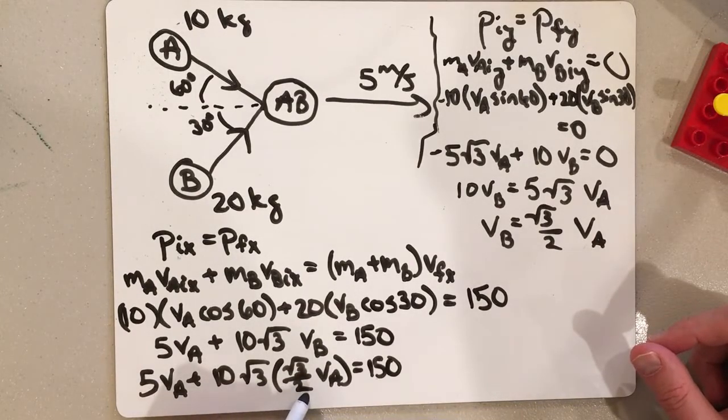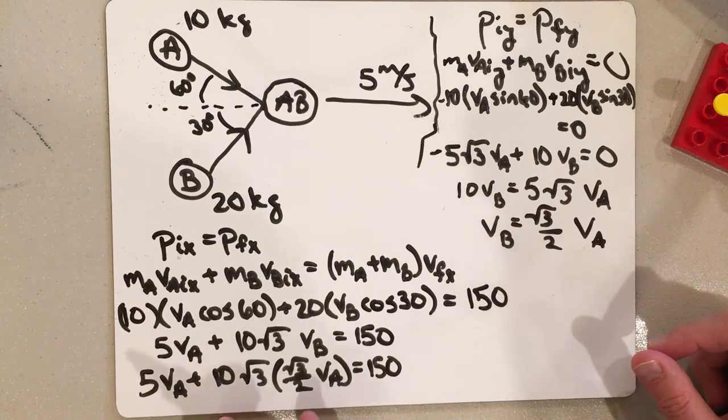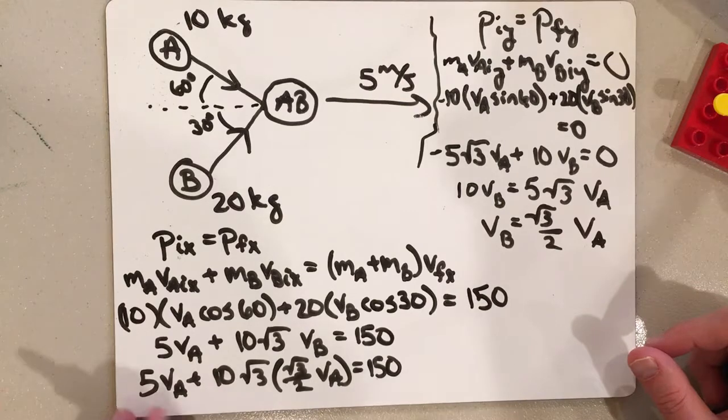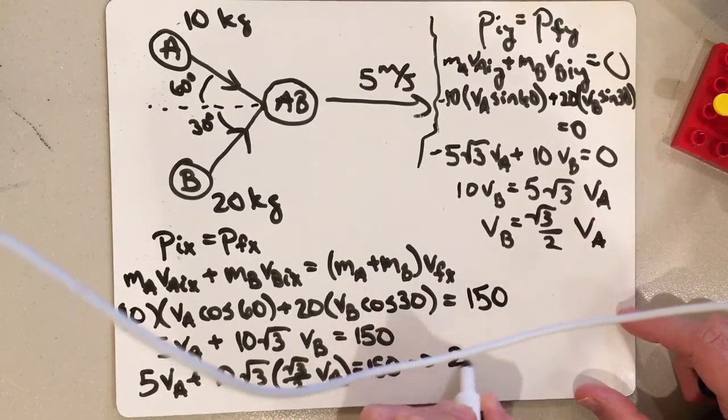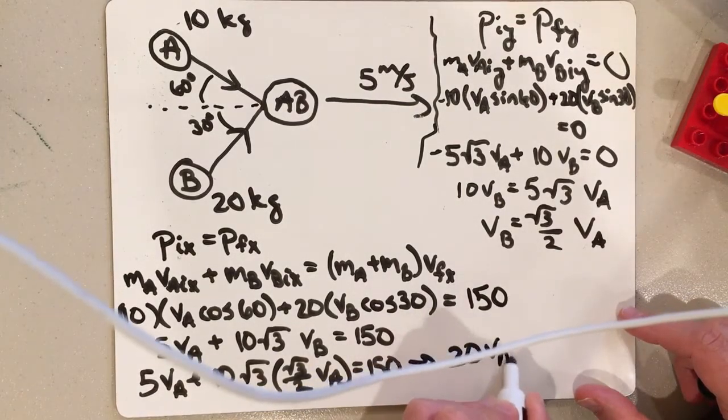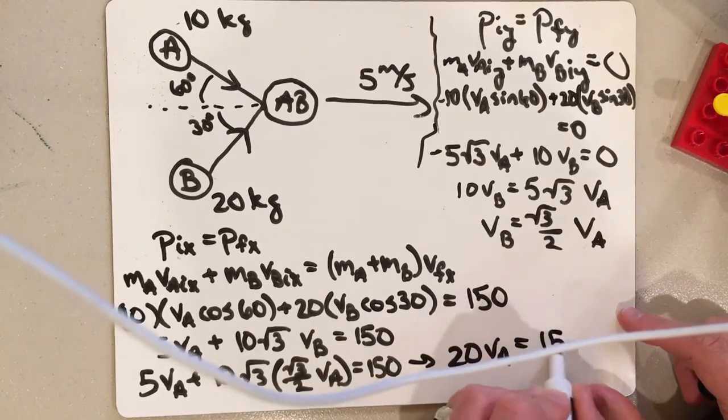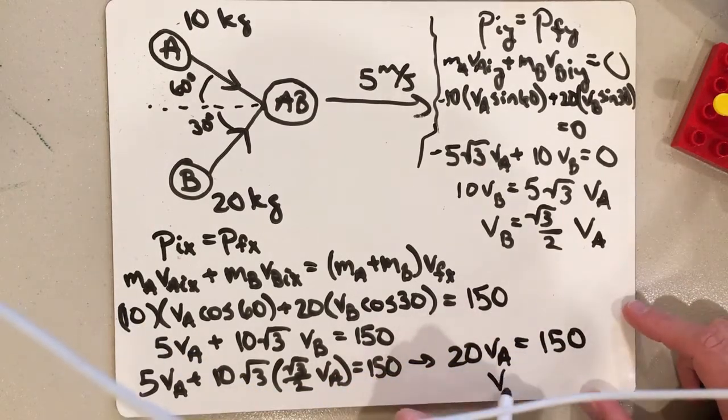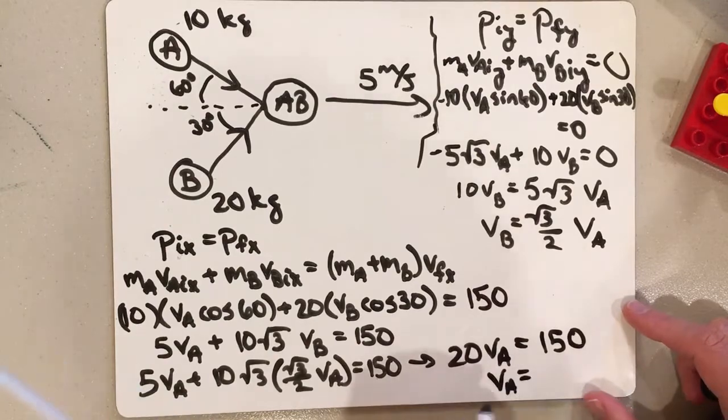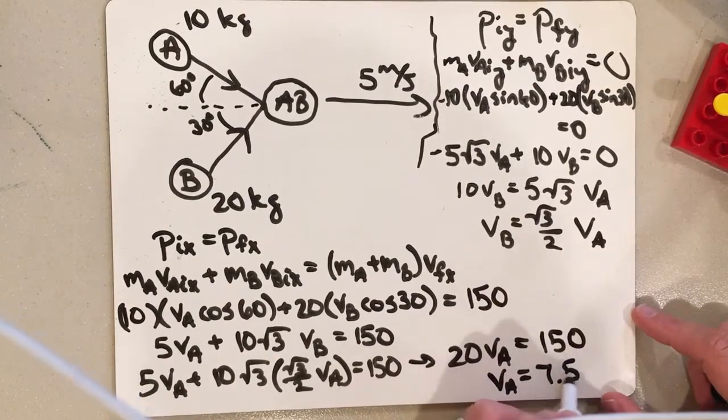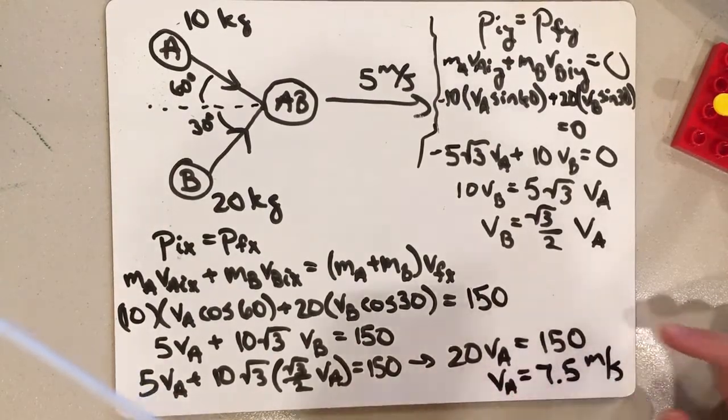So root 3 times root 3 is just 3. 10 divided by 2 is 5, so it's going to be 5 times 3, it's going to be 15. So this is going to be 15 plus 5, so that's going to give me 20 VA equals 150. And VA, this is 7.5 meters per second.